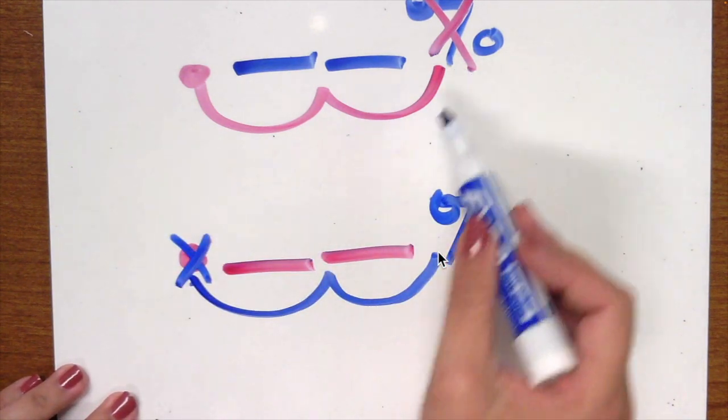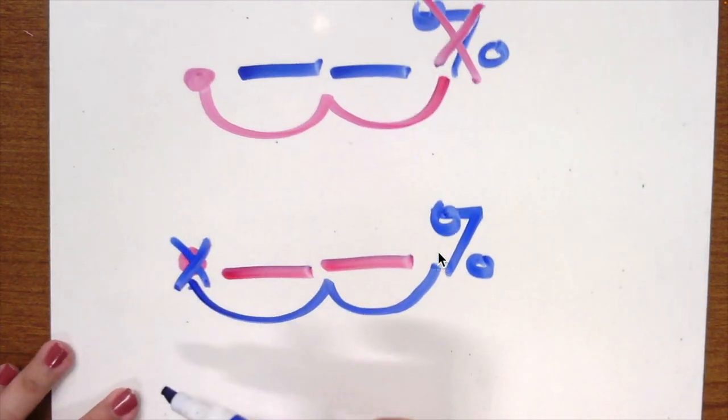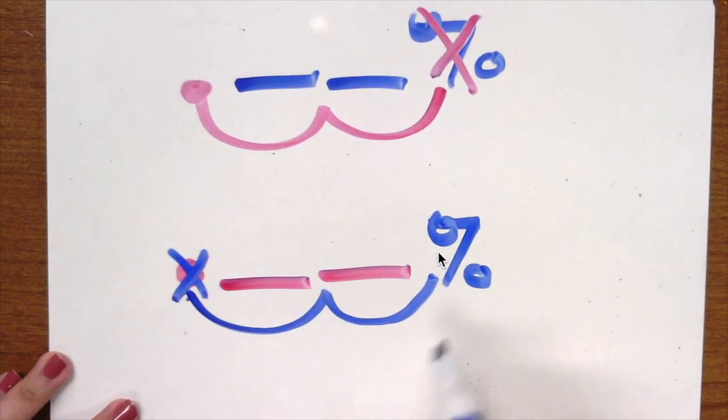So percent, you jump two spaces to the front where your decimal goes. Change decimal to percent, you jump two spaces to the back where the percent goes. Let me show you with some numbers.